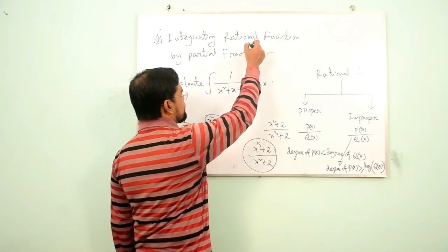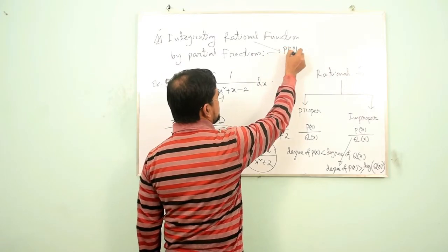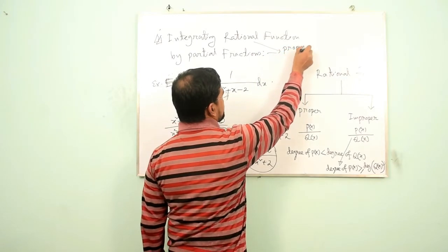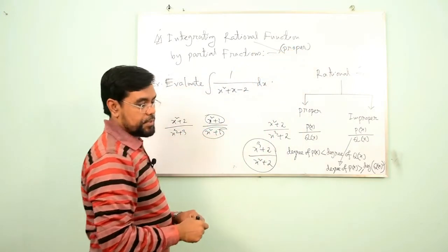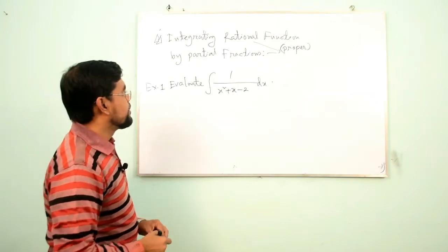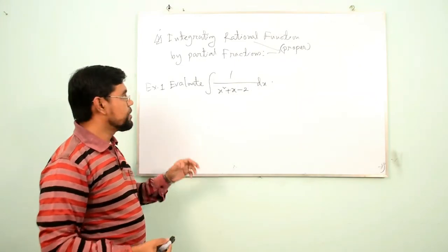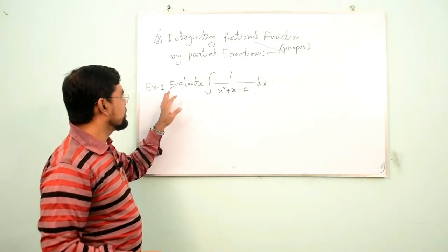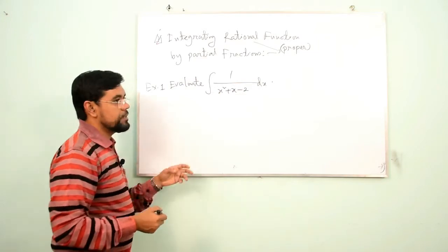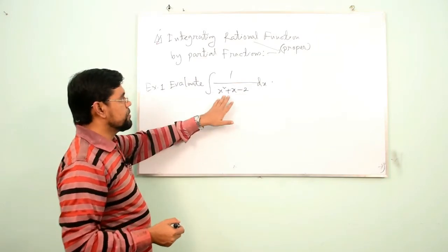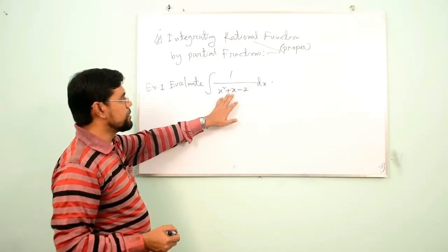First we want to integrate a proper rational function by the help of the partial fraction method. Let us try Example 1: evaluate this integral. Here, first you need to factorize the denominator.